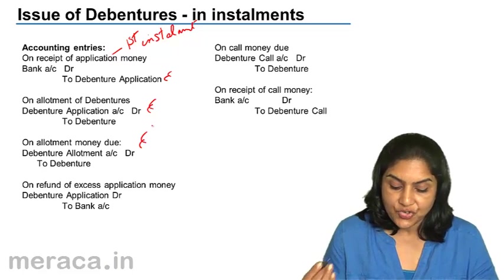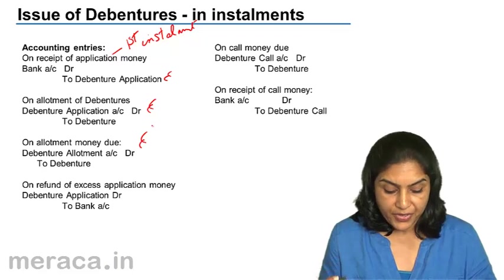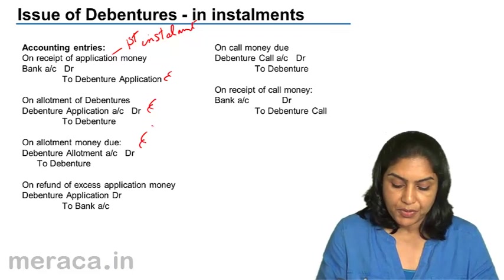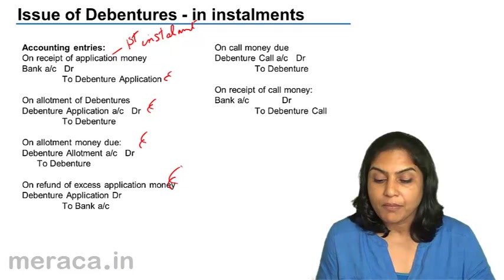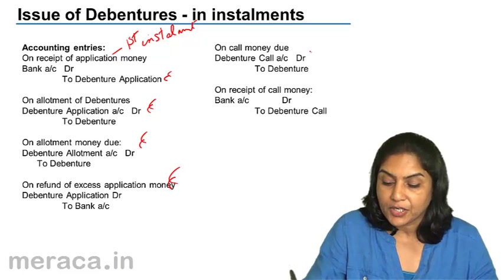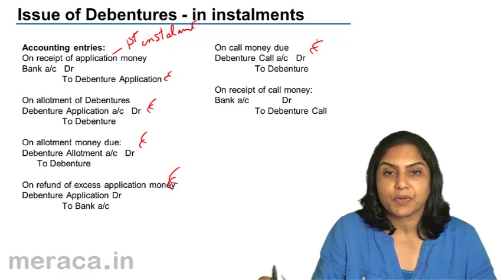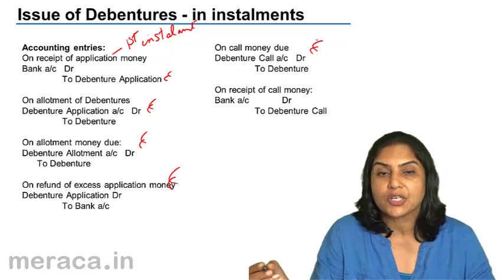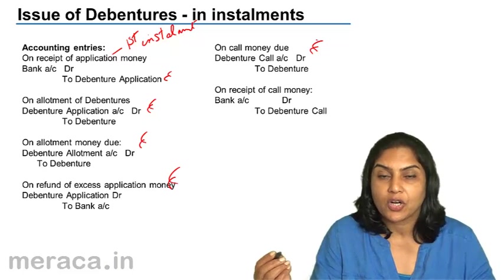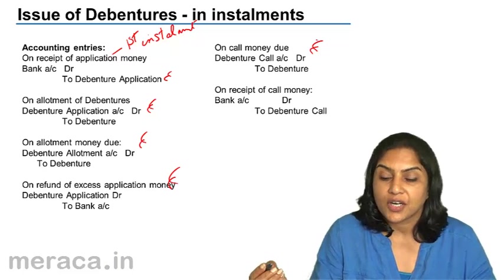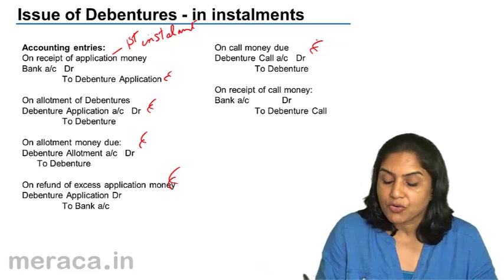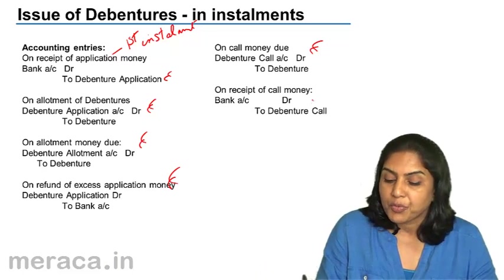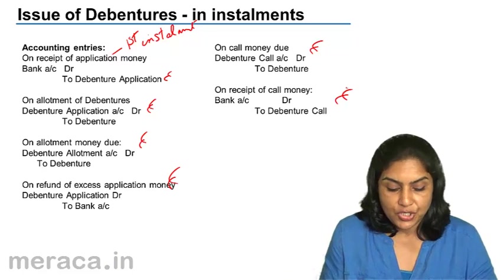If there is extra application money which is to be refunded, it would be debenture application account debit to bank. For any call money which is due, debenture call account debit to debenture — first call, second call, third and final call, whatever. When money is received on account of a call, we would have bank account debit to debenture call.